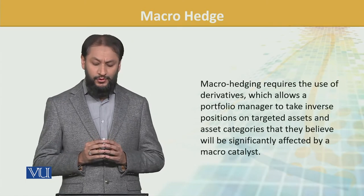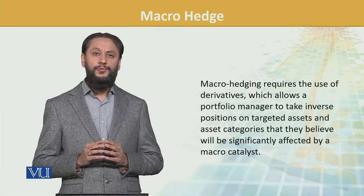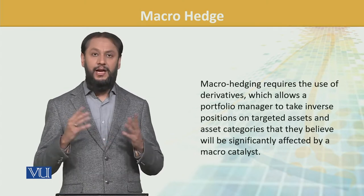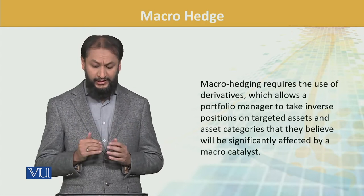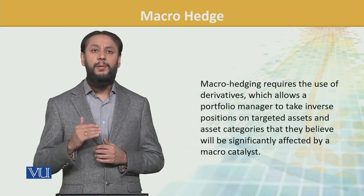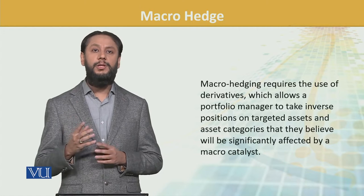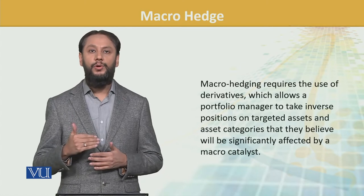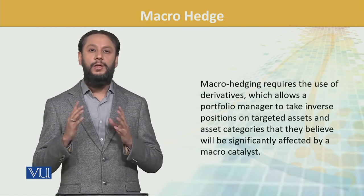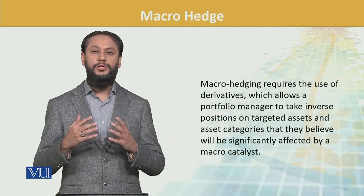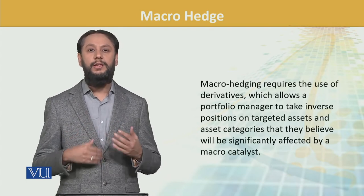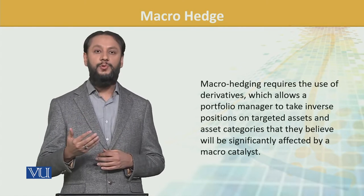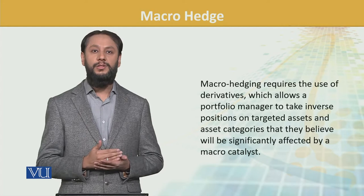Macro hedging requires the use of derivatives, which allow portfolio managers to take inverse positions on target assets and broad asset categories. They believe these will be significantly affected by macro catalysts — that is, changes at the macro or overall economy level. We assess and take positions to safeguard our portfolio from negative impact, so that we are not adversely affected.